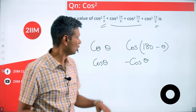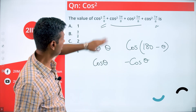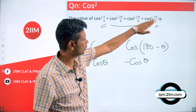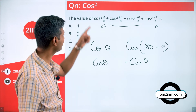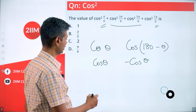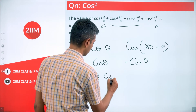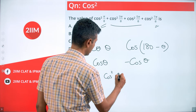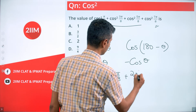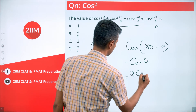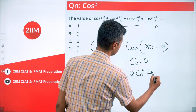cos²(5π/8) = cos²(π/8) and cos²(7π/8) = cos²(3π/8) using that identity. So we can rewrite the expression as 2·cos²(π/8) + 2·cos²(3π/8).